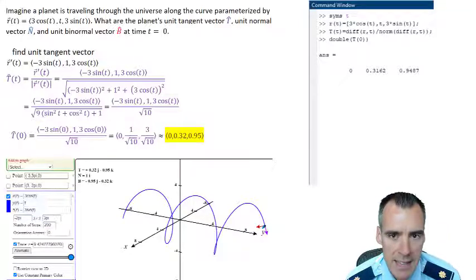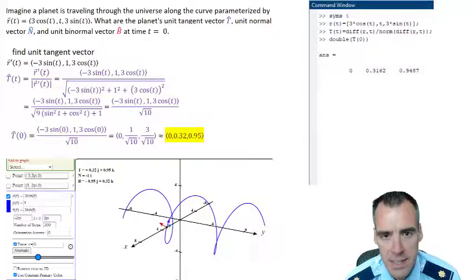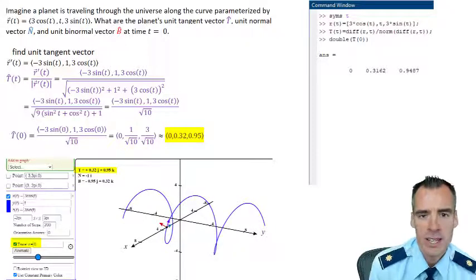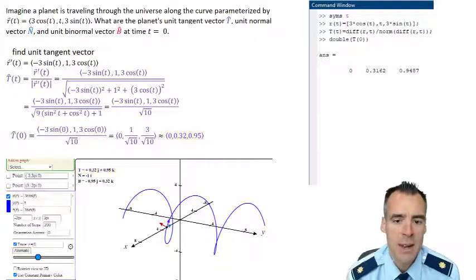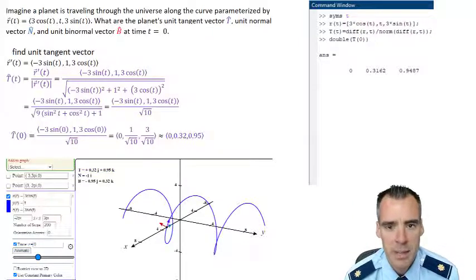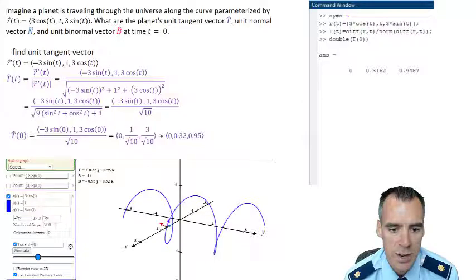If we look at CalcPlot 3D, we see that it's given us that same vector when we set the time equal to zero. So it looks like CalcPlot 3D is checking out with MATLAB and our algebraic manipulations here. We're in good shape and can just go ahead and take that N and B from CalcPlot 3D.